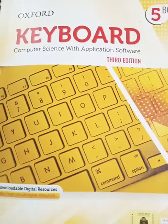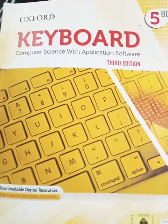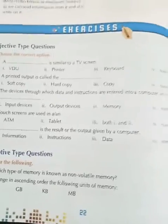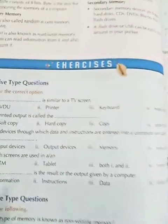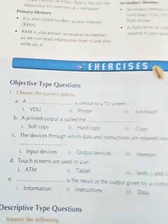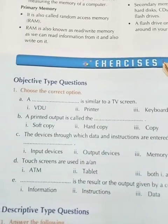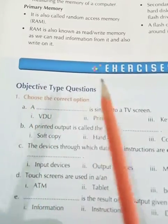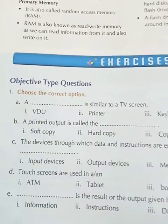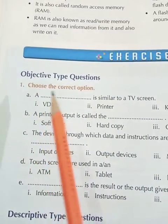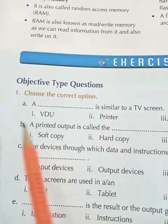Open your computer book to page number 22. Today we will do the exercise of chapter number 2, Data Devices. Write today's date and day, and we will start with objective type questions.